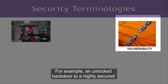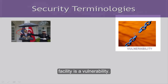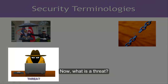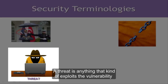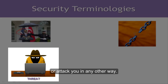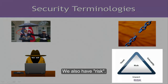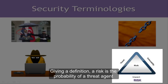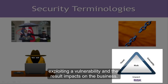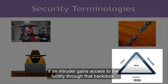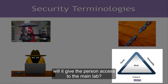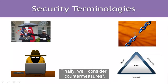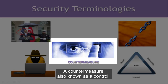For example, an unlocked back door to a highly secure facility is a vulnerability. Next is threat — a threat is anything that can exploit a vulnerability or attack you in any other way. We also have risk, which ties threat, vulnerability, and business impact together. A risk is the probability of a threat agent exploiting a vulnerability and the resulting impact on the business. Finally, a countermeasure, also known as a control, is a protection mechanism against a potential threat, thus reducing the risk.